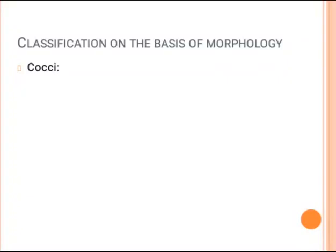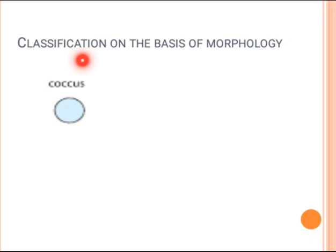This lecture is based on classification of bacteria on the basis of different morphologies. On the basis of different morphologies, you have different shapes of bacteria, including cocci, bacilli, or even spiral-shaped bacteria. Cocci are actually round-shaped bacteria.